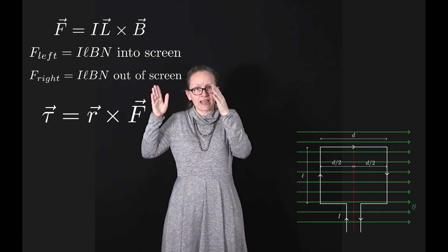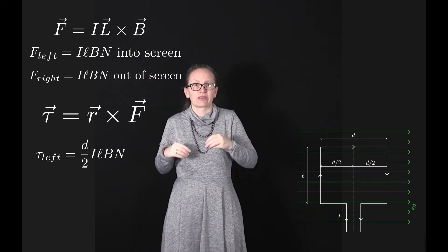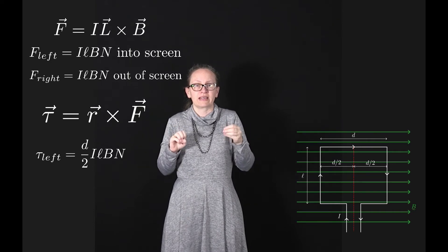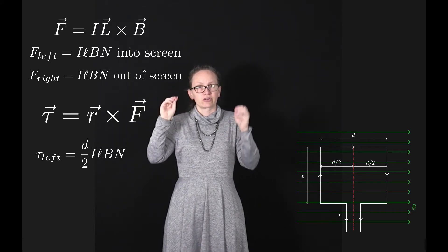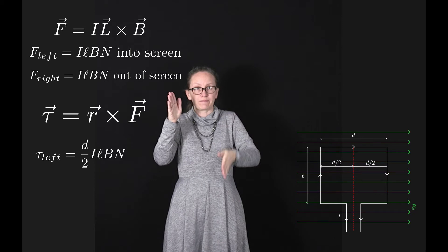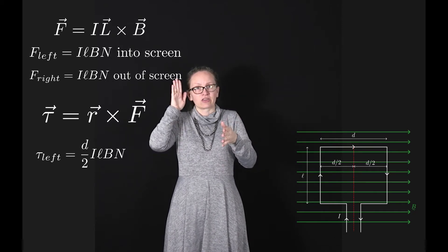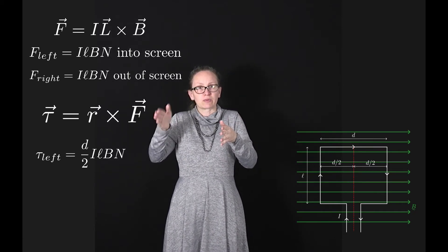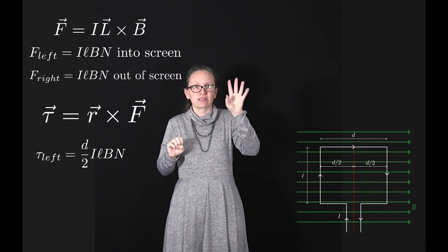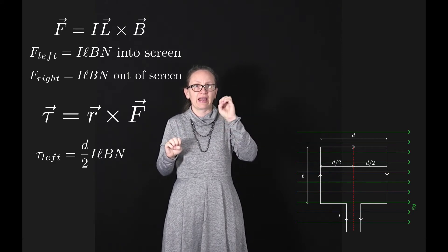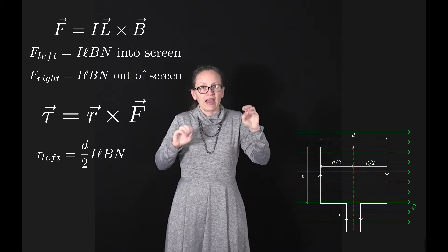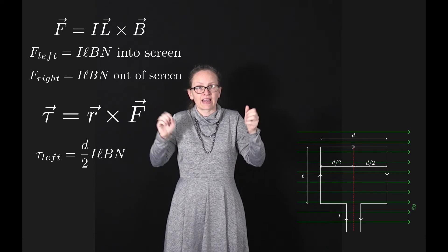Considering our left-hand side, the torque is given by D over 2, because that's the distance between the pivot point and the wire where the force is applied. The size of the force is I L B N.